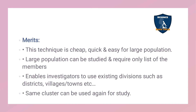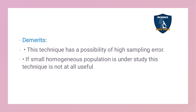In two-stage cluster sampling, only a few samples are selected from each cluster using simple or systematic random sampling. In multi-stage sampling, further sampling methods are applied at each subsequent stage. The merits are: it is very cheap, quick, and easy for large populations; it requires only a list of cluster members; it enables use of existing divisions such as districts, villages, and towns; and the same cluster can be reused for future studies. The demerit is a high possibility of sampling error, and it is not very useful for small homogeneous populations.